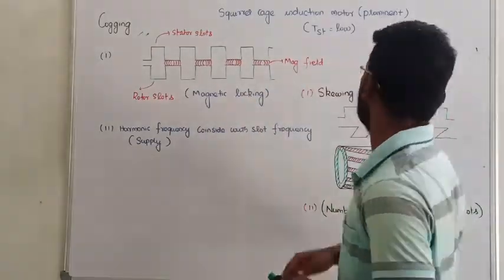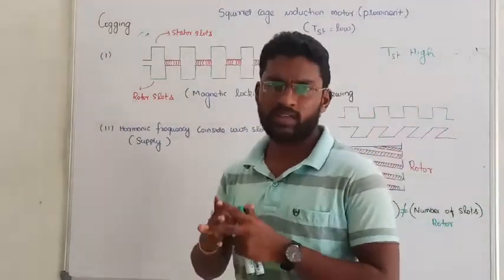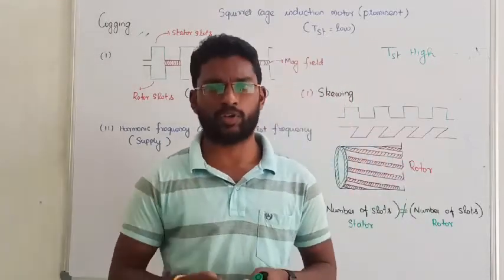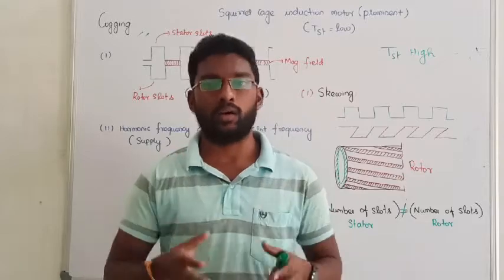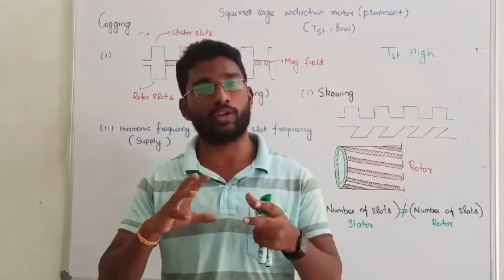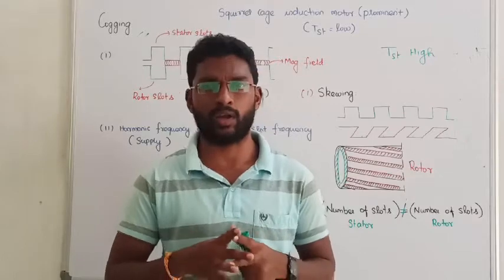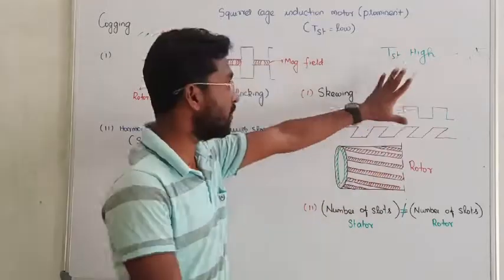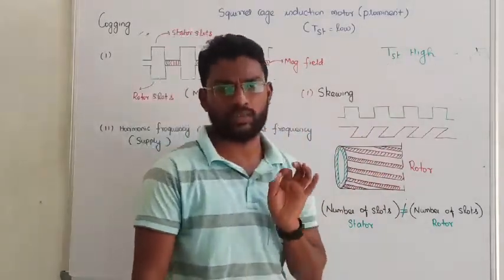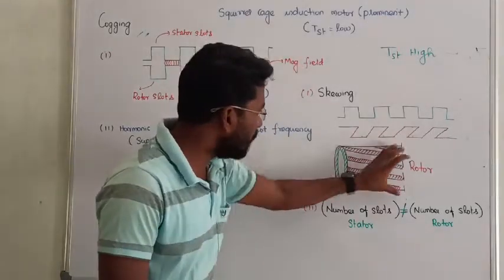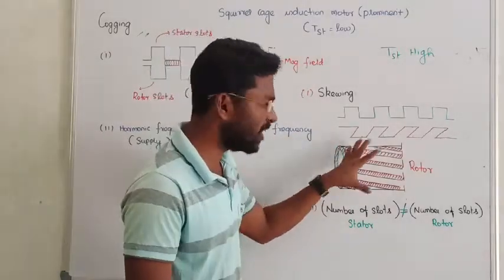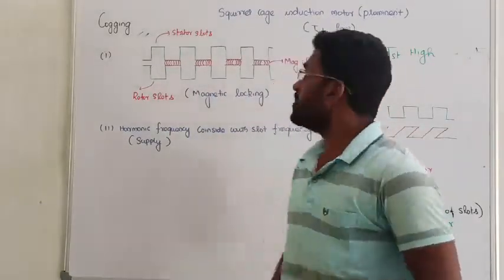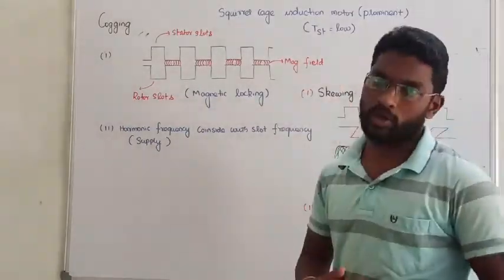You mostly won't face this problem in the squirrel cage induction motor because in the squirrel cage induction motor the rotor resistance is very high, so starting torque is directly proportional to rotor resistance. In the slip ring induction motor the starting torque is very high, so we don't have a problem there. In the squirrel cage motor, the rotor bars are short-circuited and the resistance is very low, so the starting torque is very less.